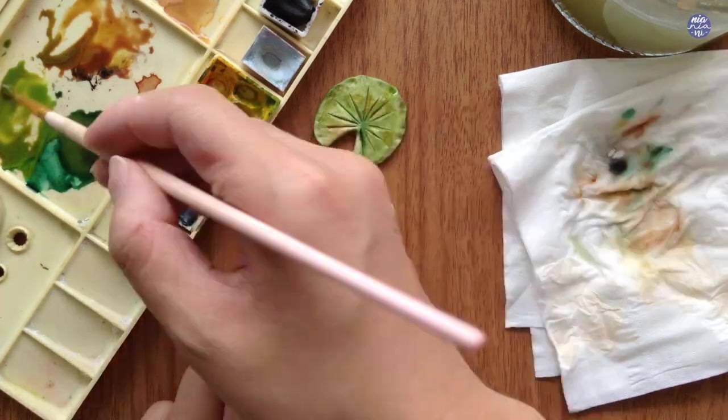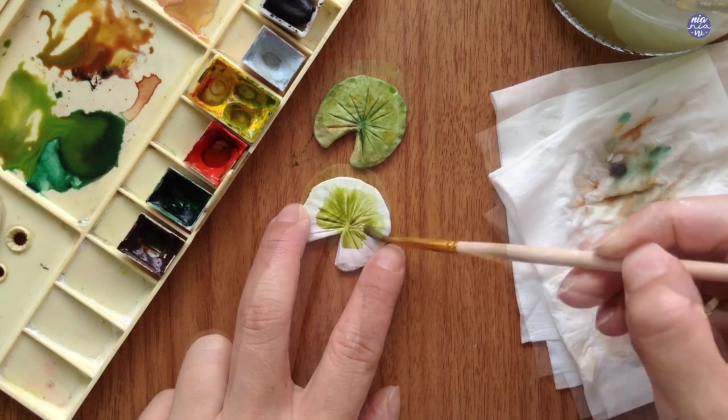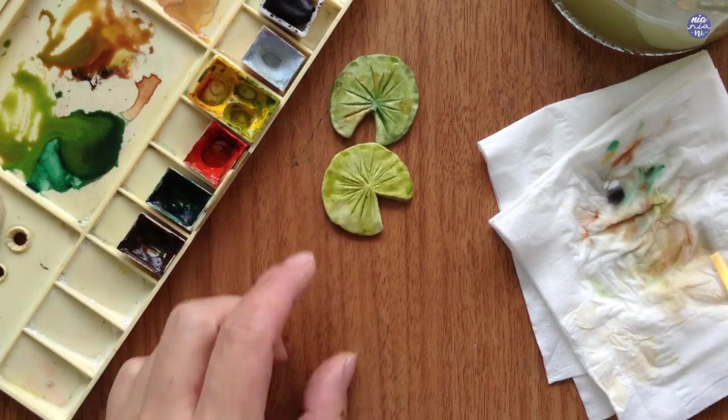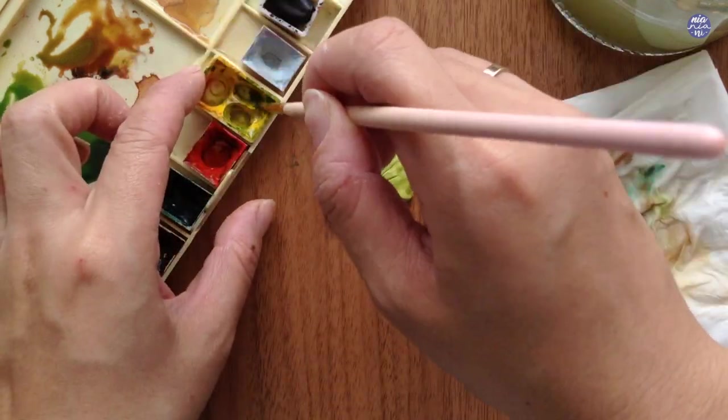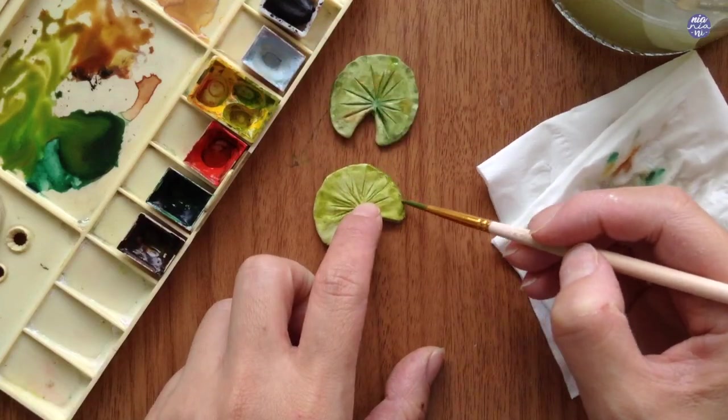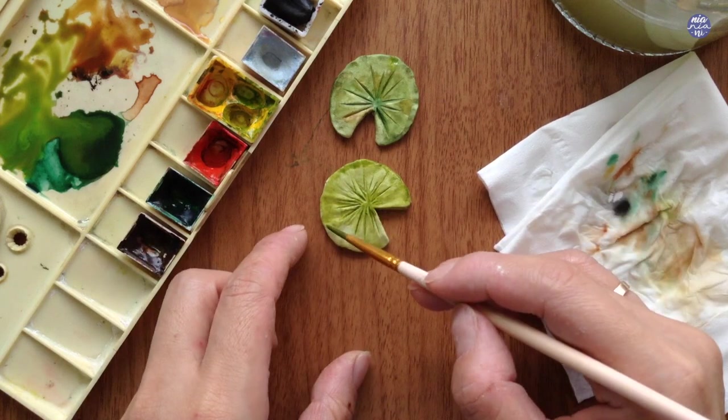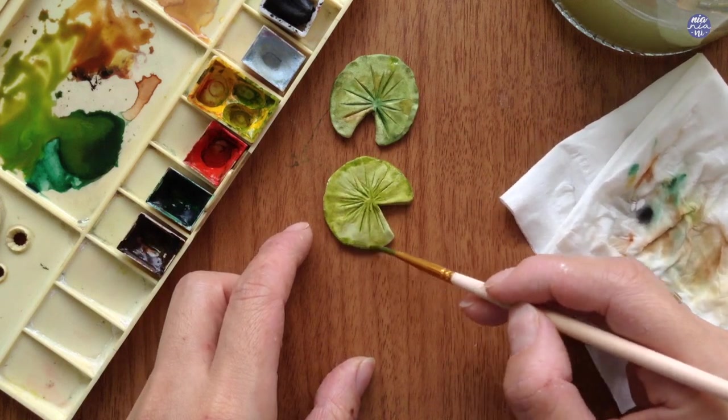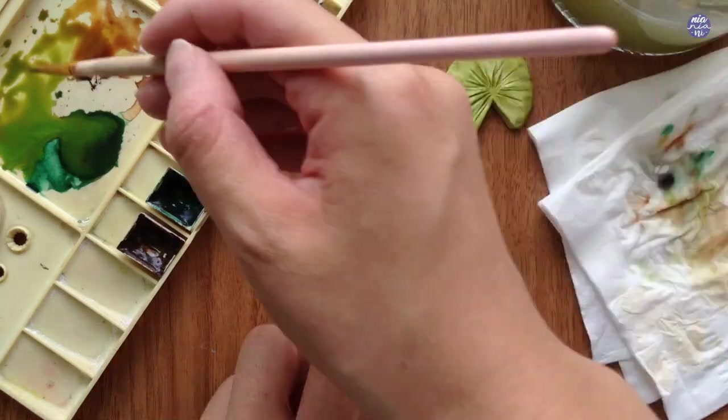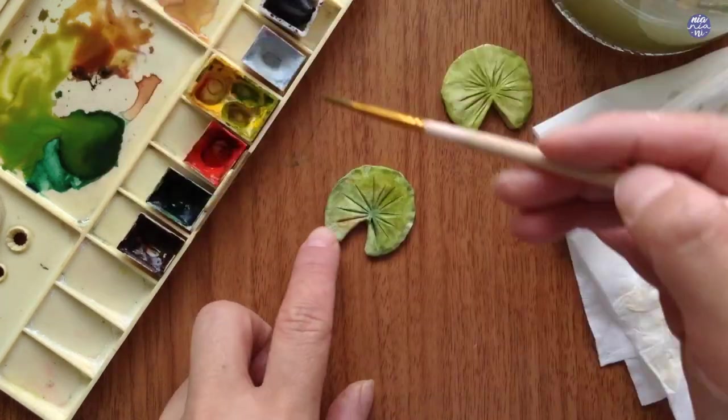I'm just going to show you one more as an example of how you can vary the color. For this, I added more Hansa Yellow Medium so the green becomes a bit more yellow-green. Then for the darker tone of green, I still use the exact same mix, but I reduced the yellow and increased the Burnt Umber and Viridian. I'm just going to quickly dry it off with a hairdryer. And as you can see, just like usual, watercolor will always fade as it dries, so I'm going to glaze on more color.